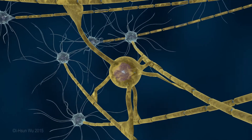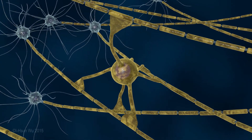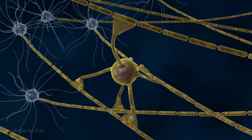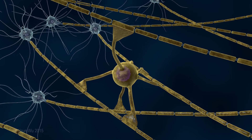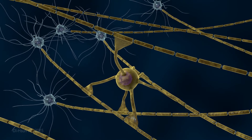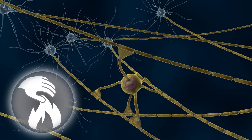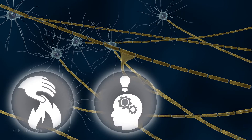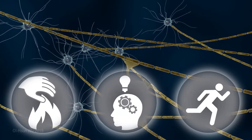The myelin protects the axon and insulates the electrical impulses to allow neurons to transmit impulses quickly and efficiently, so we can feel, think, and move the way we normally do.